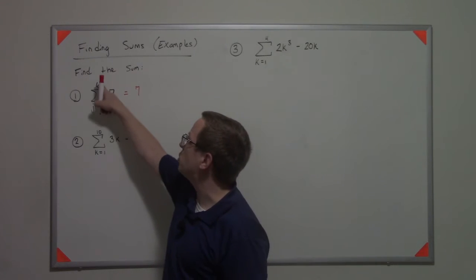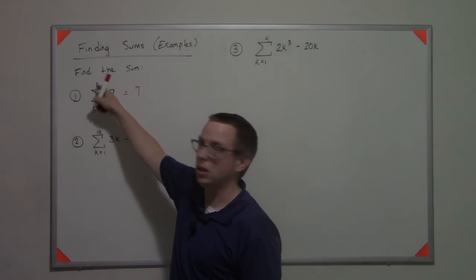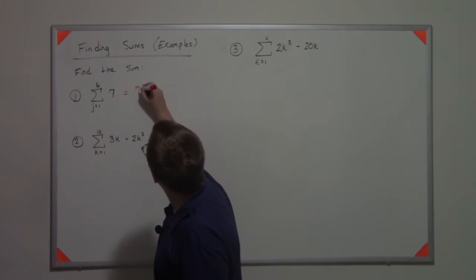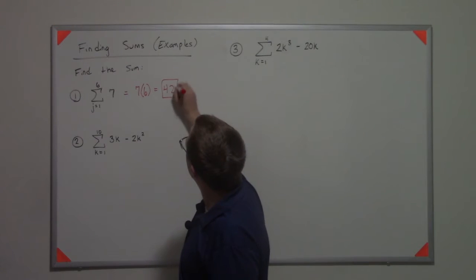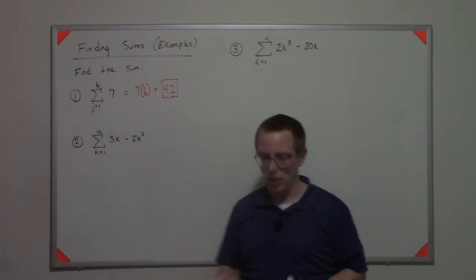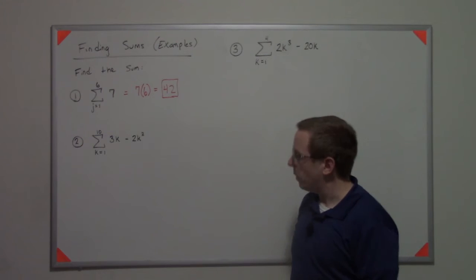Like if this was j equals 2 to 7, it would be the same thing. But that's a little extra flavor. So we get 42 when we evaluate that.